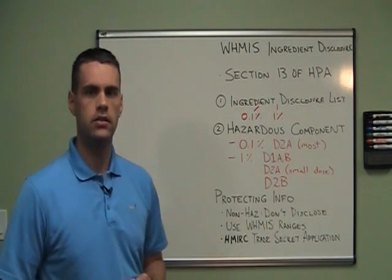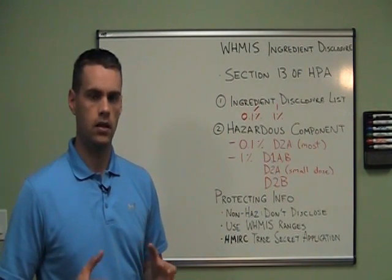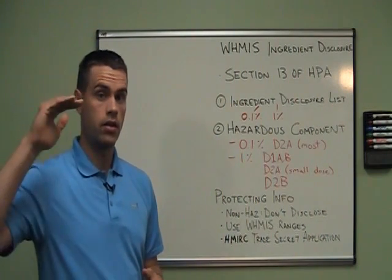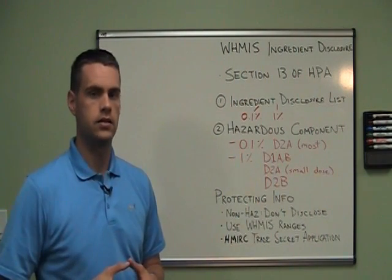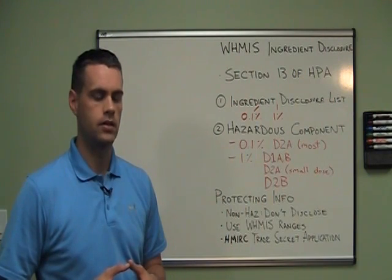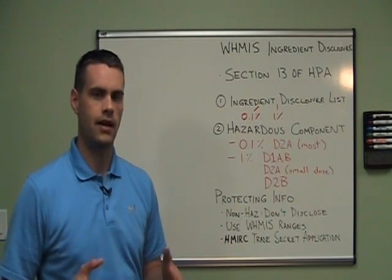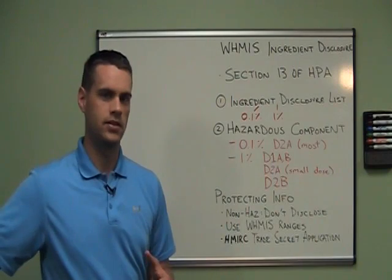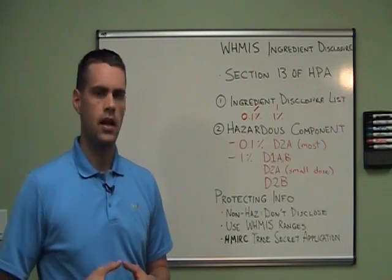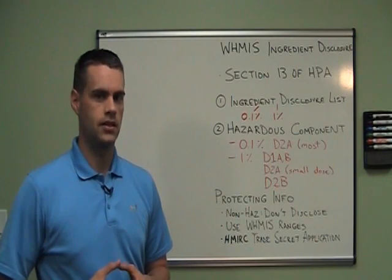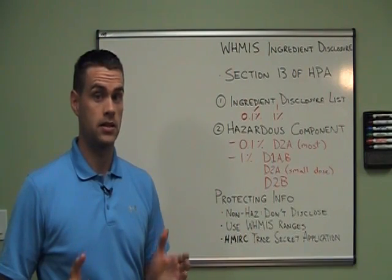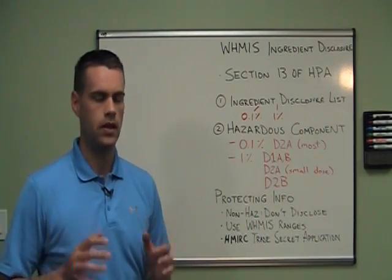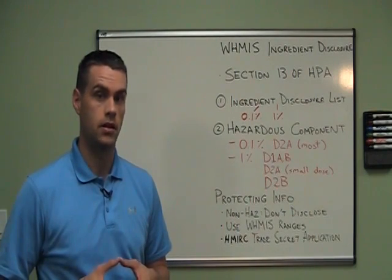The second option is to use WHMIS ranges. In the WHMIS regulations, in the CPR, there are 13 different ranges you can use for your chemical components. So instead of saying acetone is in this formulation at 3.728% — which is too much information — you use one of the WHMIS ranges. You can say acetone is in this mixture at between 1% and 5%, or 3% and 7%, whichever WHMIS range applies.